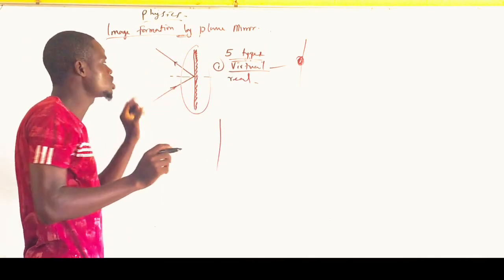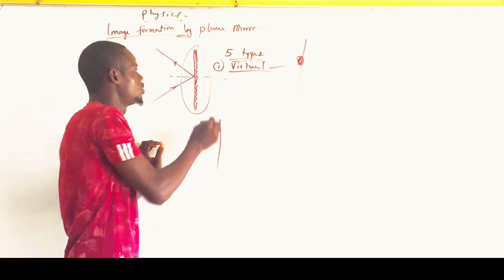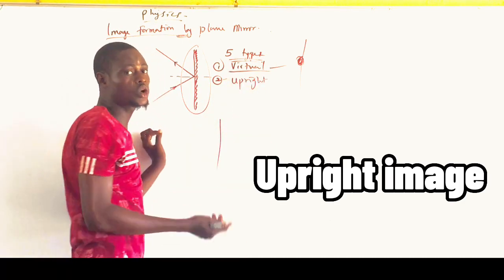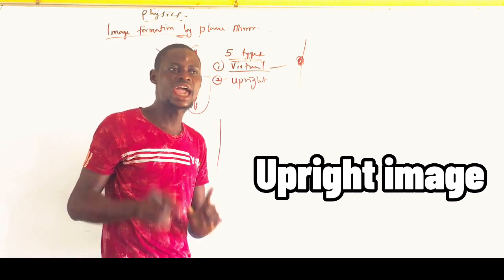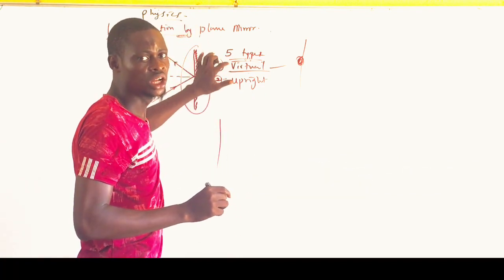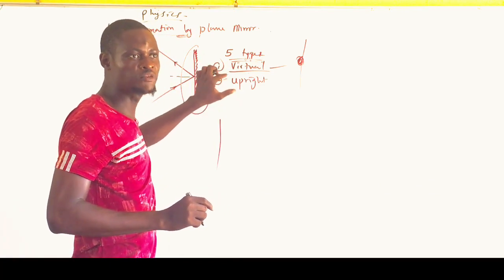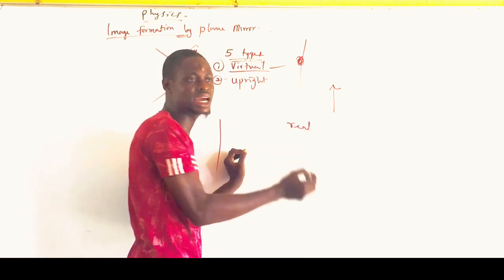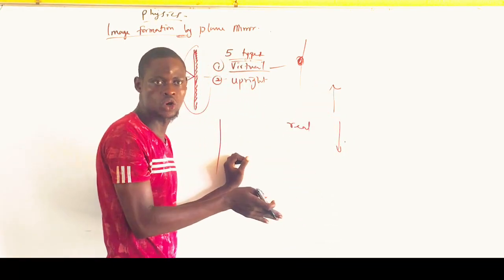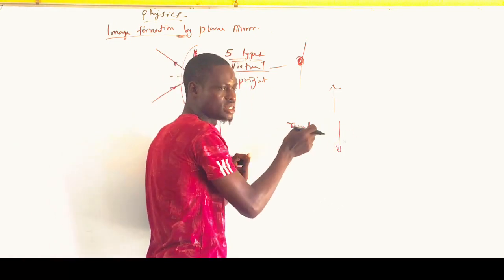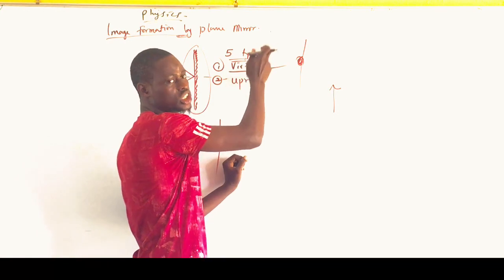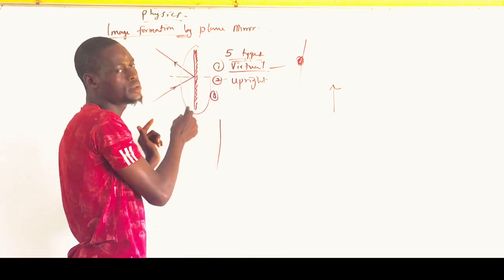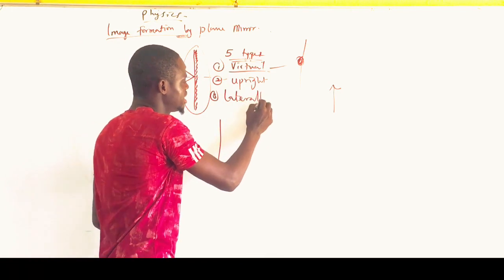Any plane mirror must form, number one, a virtual image. Number two, the image formed will be an upright image — we can also call it an erect image. Here is a key secret: any mirror that forms a virtual image must produce an upright or erect image. Real images, on the other hand, are always inverted. So if a mirror forms a real image, that image must be inverted; if it forms a virtual image, that image must be erect.